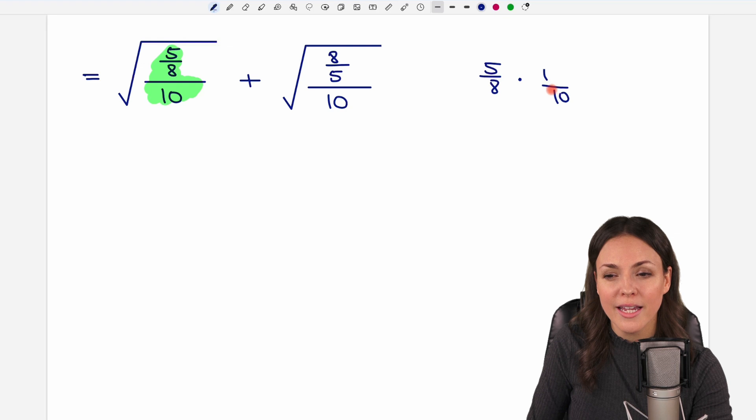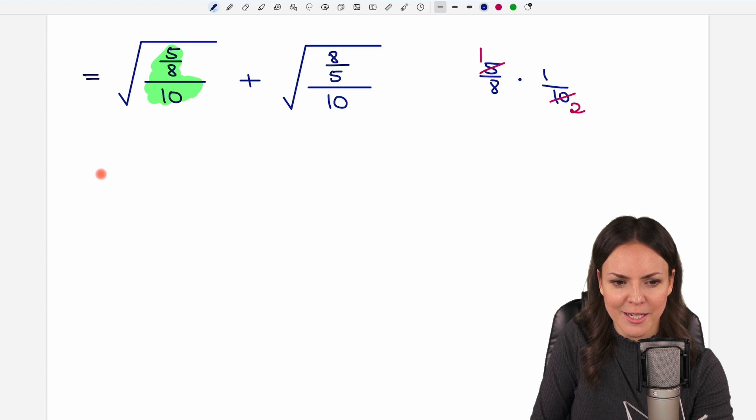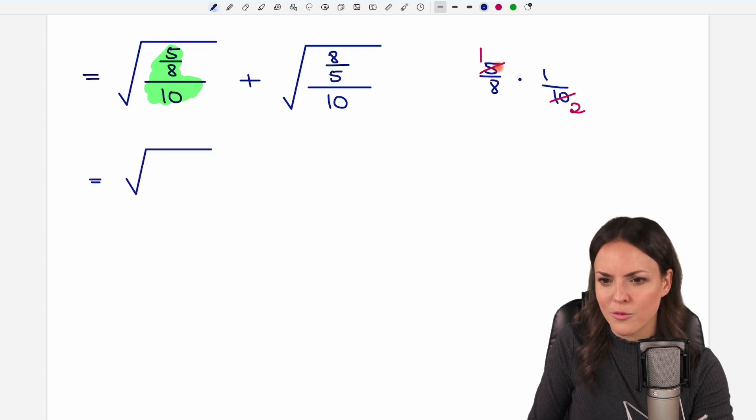Now we can multiply, or we can first cancel things out because the 5 and the 10 are both divisible by 5. So 10 divided by 5 equals 2, 5 divided by 5 equals 1. Now we can multiply. We write down the square root and as a result we get 1 times 1 equals 1 and on the bottom 8 times 2 equals 16. First square root done.